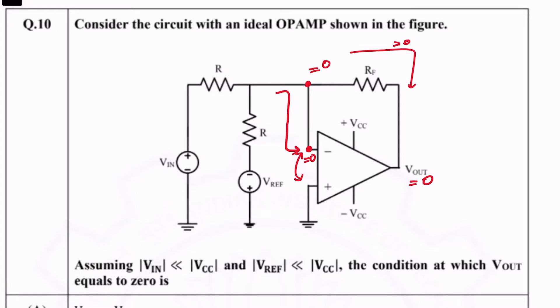So the idea is that no current flows into this branch, so that means the input current must just circulate in this loop. Let us do a KVL for that loop and see what we get.